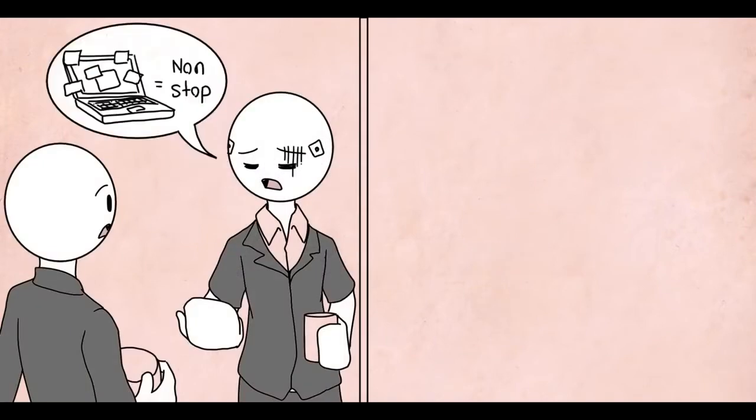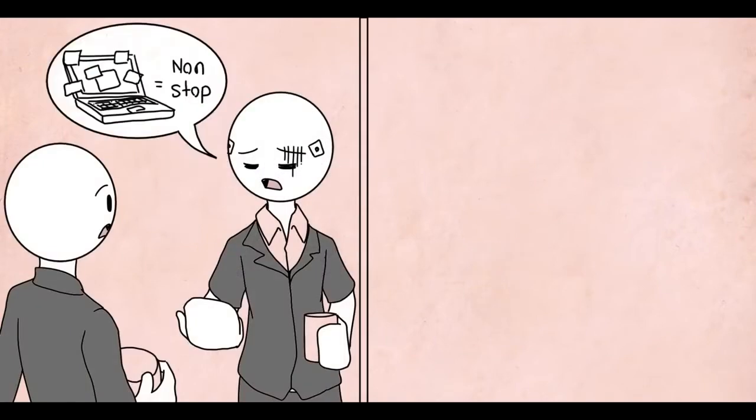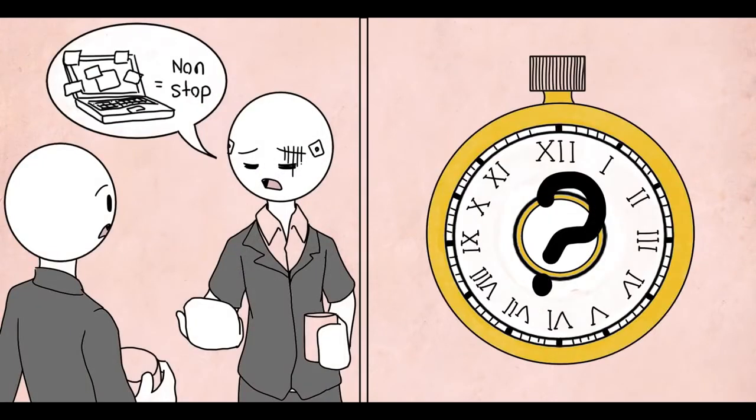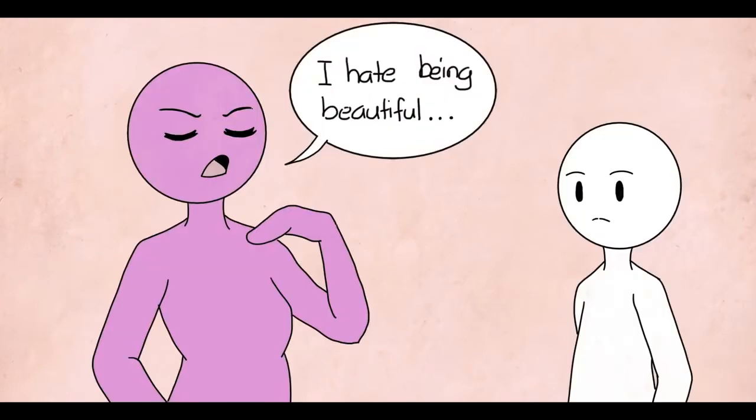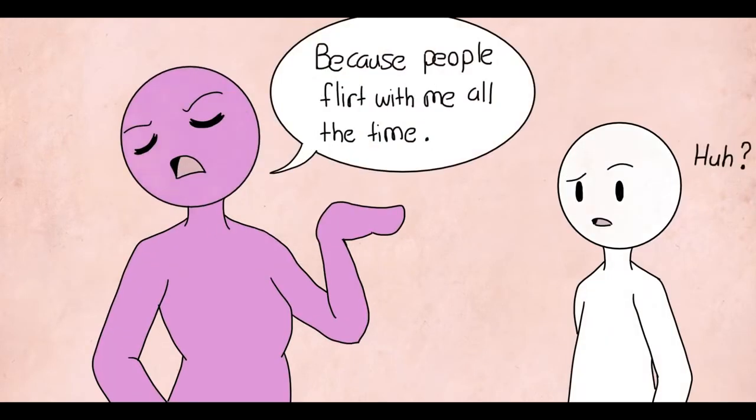Humble bragging. Humble bragging is a relatively new term, but it's been around for ages. This is when people exhibit false modesty. They pretend to downplay their own accomplishments while subtly bragging about them at the same time. An example would be someone who says, I hate being beautiful because people flirt with me all the time.